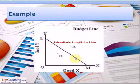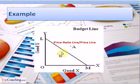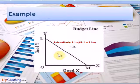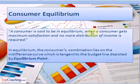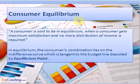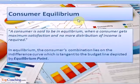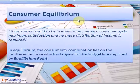The consumer cannot opt for a combination beyond the line LM, such as point A, which he cannot afford. If the consumer selects a combination under the budget line, as shown by point B, the budget will not be fully utilized. This brings us again to the term consumer equilibrium: a consumer is in equilibrium when maximum satisfaction is achieved and no further redistribution of income is required. The consumer will be in equilibrium if he selects the combination lying on the indifference curve which is tangent to the budget line.